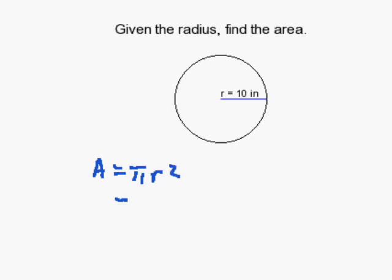We can substitute 10 for r and get π times 10 times 10. This gives us 100π inches squared.